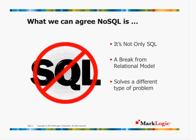We have a question here: you were talking about the use of NoSQL being informed by three questions — the shape of the data, the questions to be asked of that data, and the data retention policies. Can you give an example of how those answers might change and make a difference in the decision?